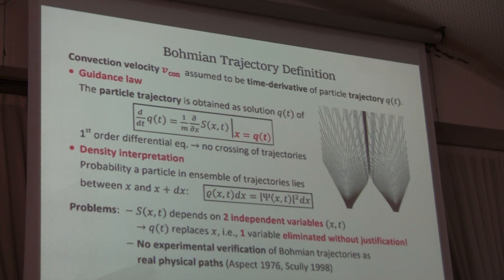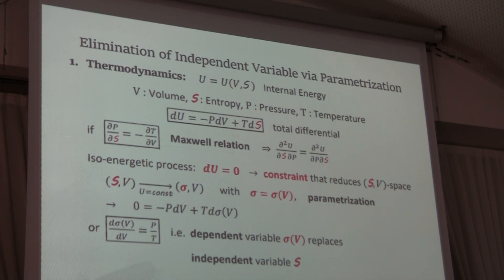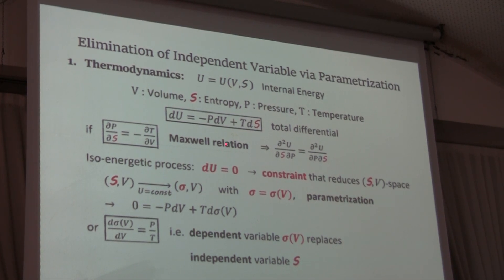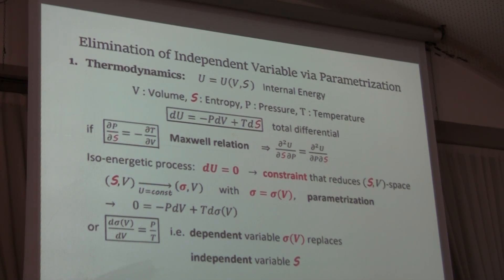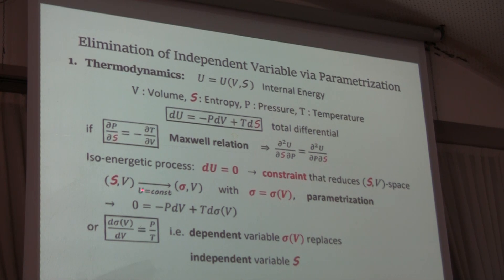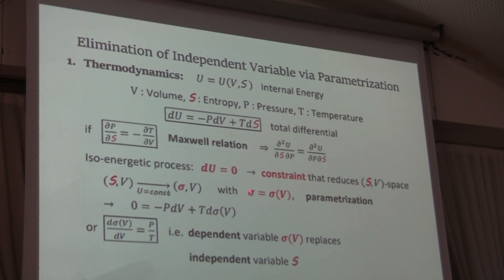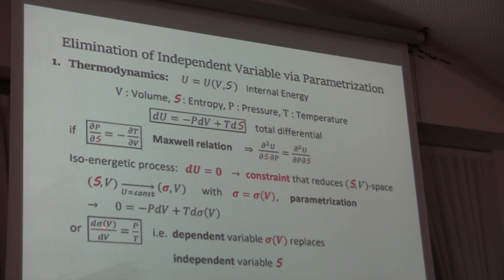Morse had the idea that we could take an analogy from thermodynamics. In thermodynamics, you have the internal energy as a function of volume and entropy, and you can write down a total differential of the internal energy. This is valid if the Maxwell relation holds — the mixed second derivatives are equal. Now you can look at specific processes where the internal energy is constant, du equals zero, and this constraint allows you to replace the independent variable entropy by a dependent one sigma. You can then find a relation that tells you how sigma depends on the volume.